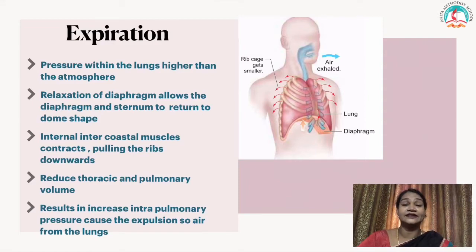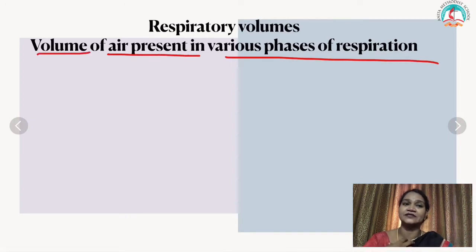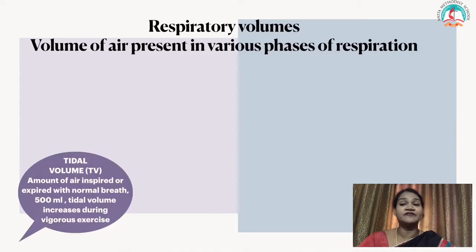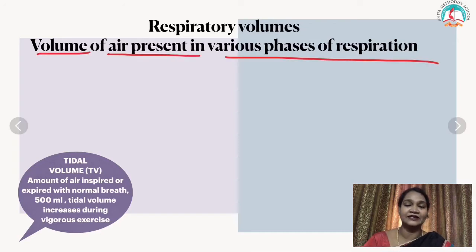Now let's learn about respiratory volume — the volume of air present in various phases of respiration. There are four respiratory volumes. The first is tidal volume (TV): the amount of air inspired or expired during normal breathing, which is 500 ml. The tidal volume increases during exercise; when you run or walk fast, you breathe much harder.